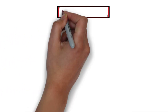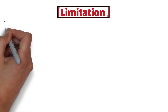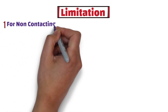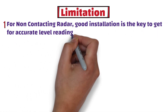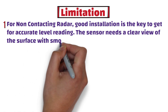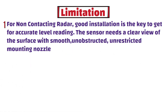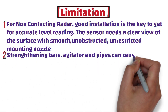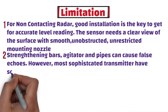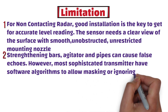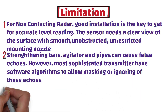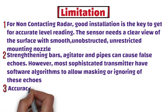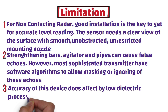Radar level transmitter has a few limitations as well. Since it is non-contacting level measurement, good installation is the key to getting accurate level readings. The sensor needs a clear view of the surface with a smooth, unobstructed, unrestricted mounting nozzle. Secondly, strengthening bars, agitators, and pipes can cause false echoes; however, most sophisticated transmitters have software algorithms to allow masking or ignoring of these echoes. Lastly, the accuracy of this device is affected by low dielectric process fluids, because much of the radiated energy is lost to the fluid, leaving very little energy to be reflected back to the sensor.